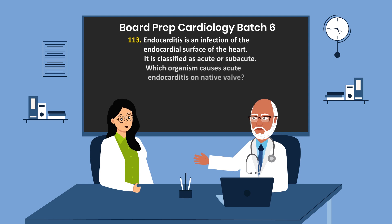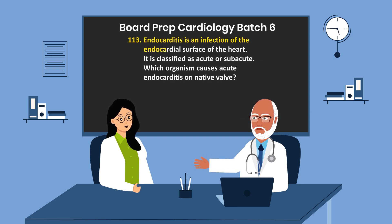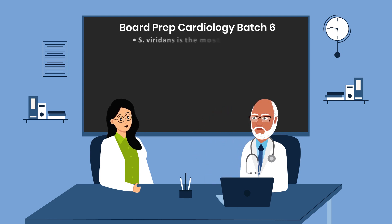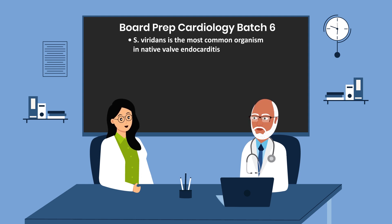Question 113. Endocarditis is an infection of the endocardial surface of the heart. It is classified as acute or subacute. Which organism causes acute endocarditis on a native valve? Streptococcus viridans. Streptococcus viridans is the most common organism in native valve endocarditis.